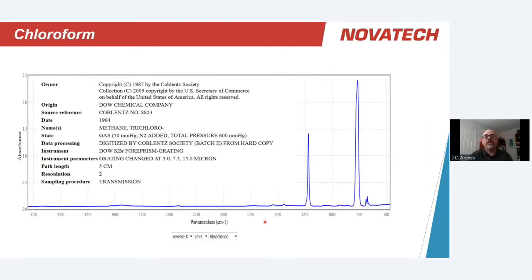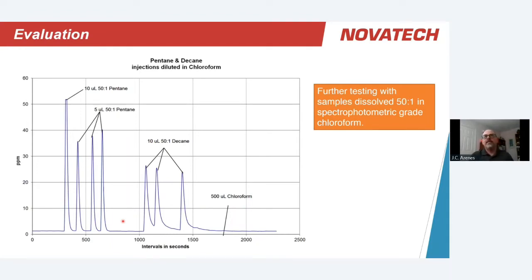We then chose chloroform as the dissolving agent rather than methyl ethyl ketone. Chloroform's infrared absorption is completely away from where our hydrocarbons absorb, ensuring the background solvent would not influence the reading. Testing with pentane and decane diluted in chloroform showed excellent response — even 10 microliters at 50-to-1 dilution for decane. When we injected 500 microliters of straight chloroform, there was no response whatsoever, confirming that chloroform had no influence on the reading and that we were still getting excellent response from C5 through C10 hydrocarbons at 50-to-1 dilutions.